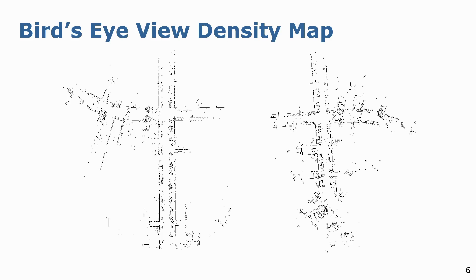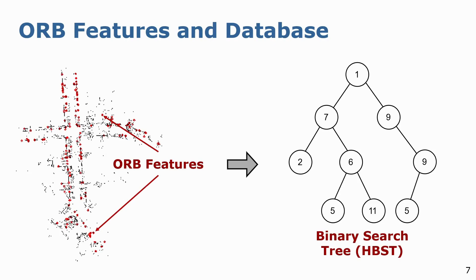From here, we can leverage techniques from image processing to describe each density map with local features. In particular, we use the simple ORB features to describe the scene. These features are highlighted as red points here. Since ORB features have a binary representation, we make use of a binary search tree based on the Hamming distance metric to create a database of the features associated with each local map. Such a database can be created online without any pre-training step. The Hamming distance can also be effectively computed for feature matching when querying for loop closures.